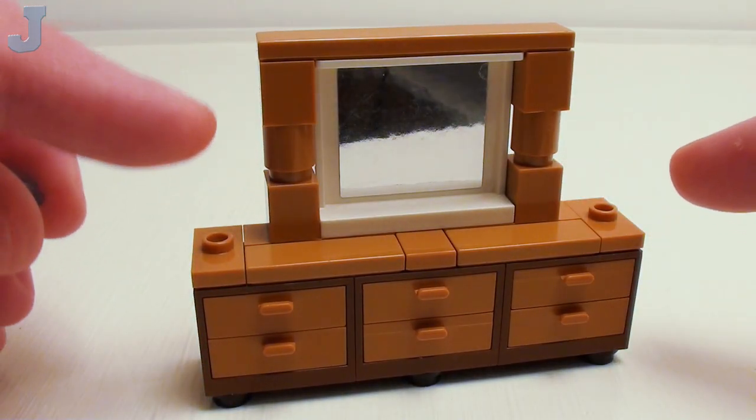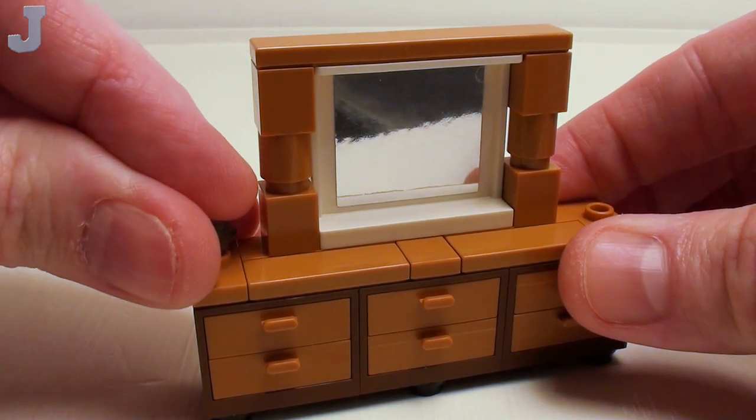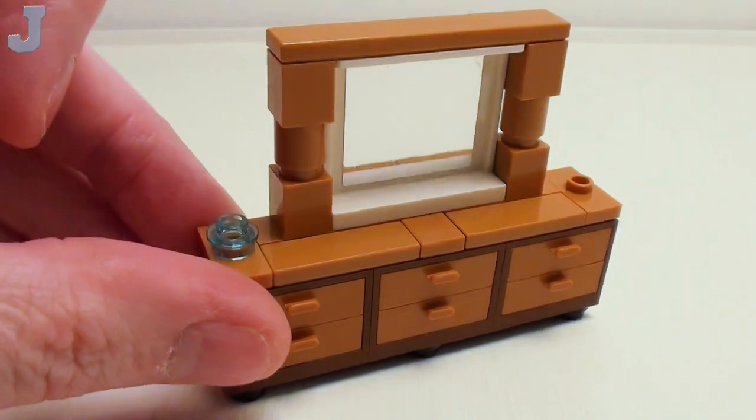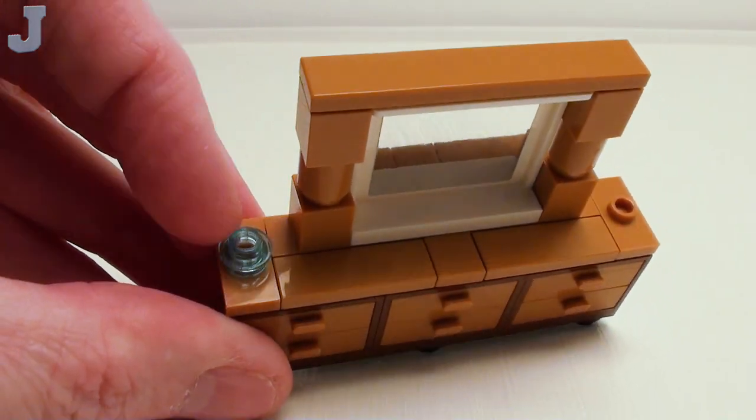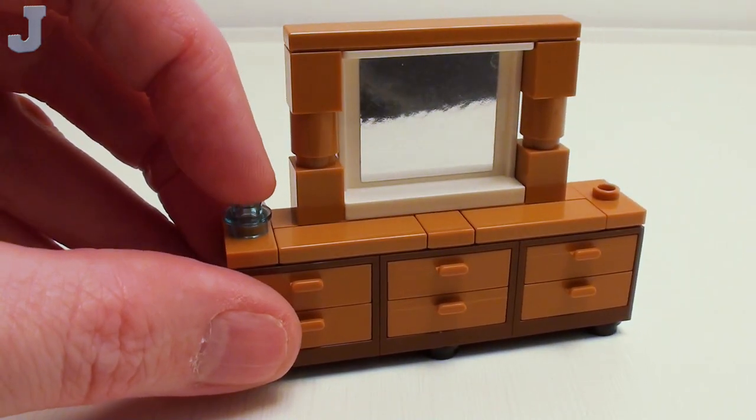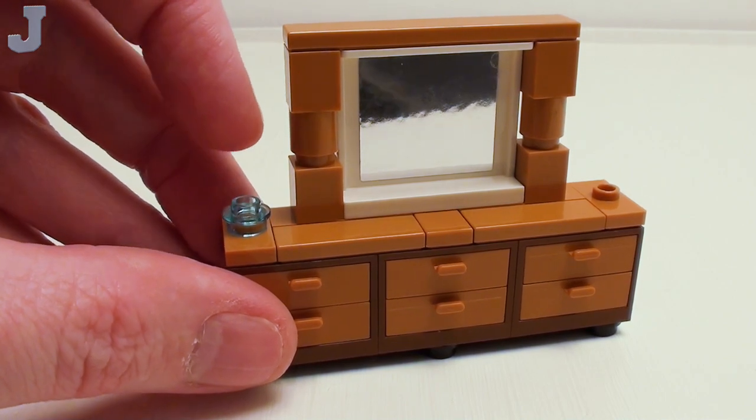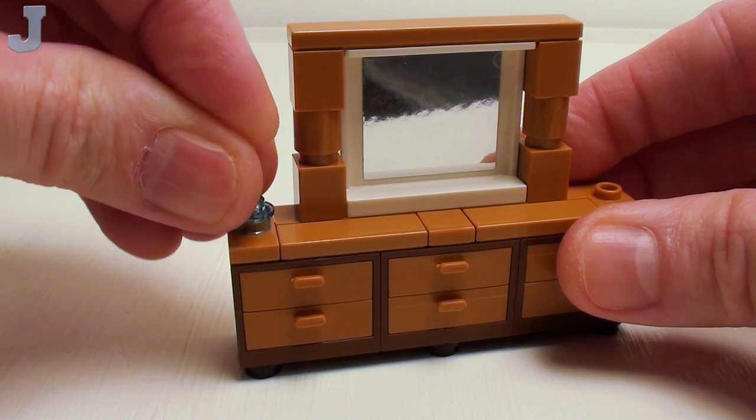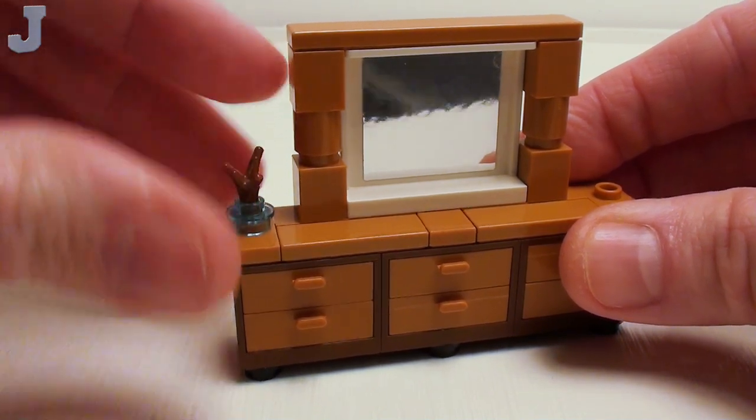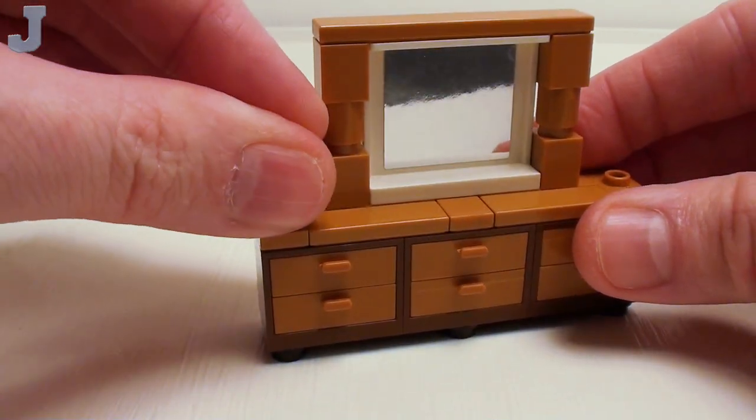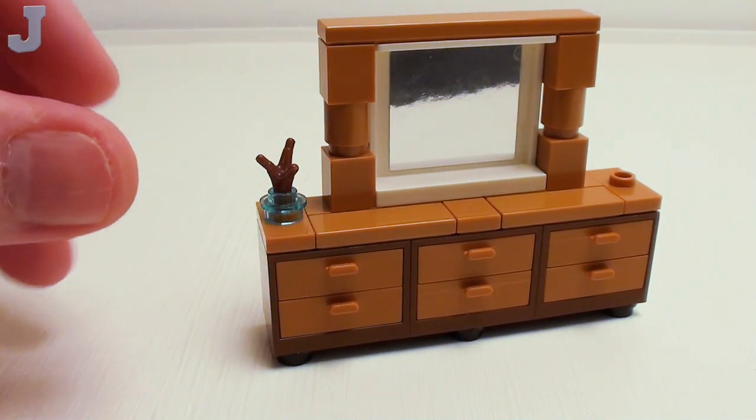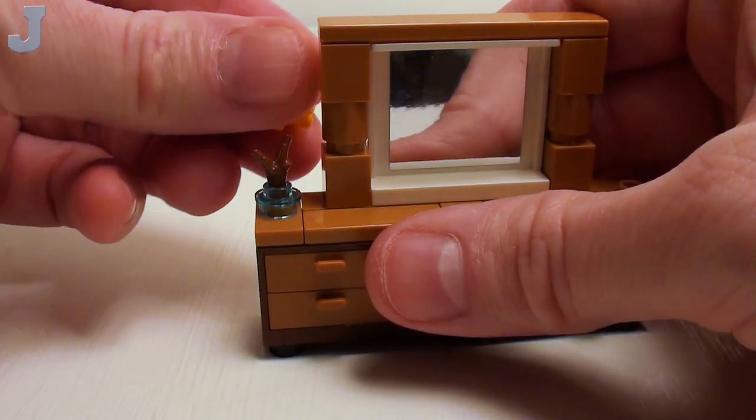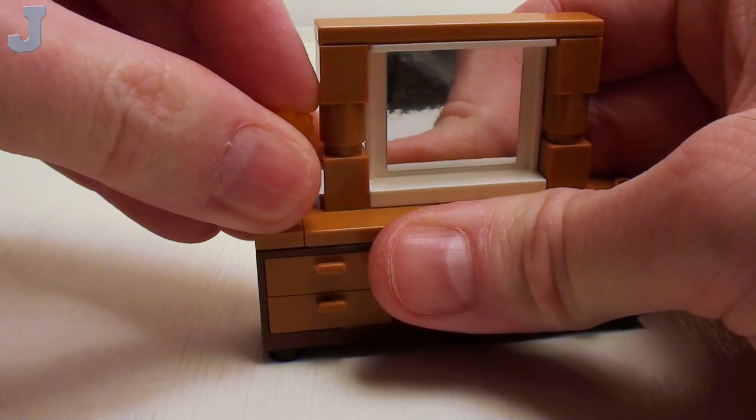These two jumper plates are left open for accessories. So I'm going to place a little potted flower on the left-hand side. So I'm going to take a transparent blue one-by-one round plate with hole. Set that right in there and a little stem piece. And then we're going to take some of these friends flowers.